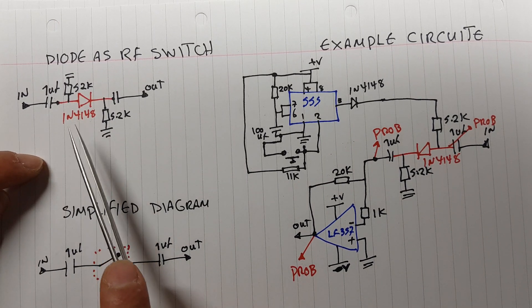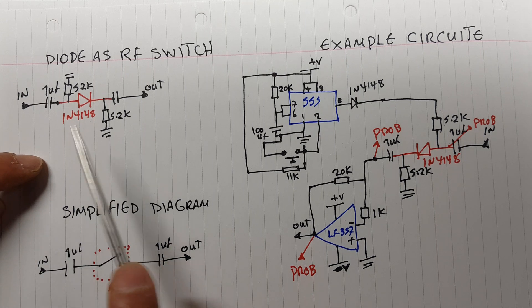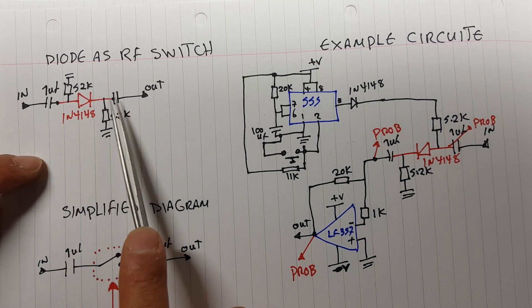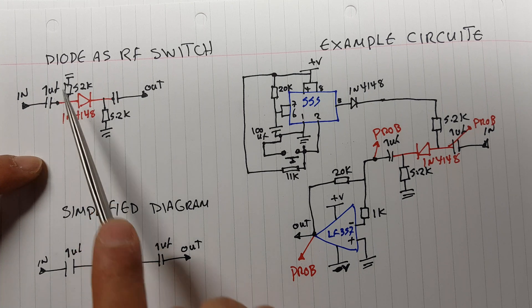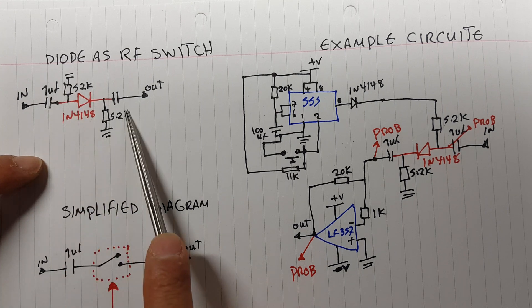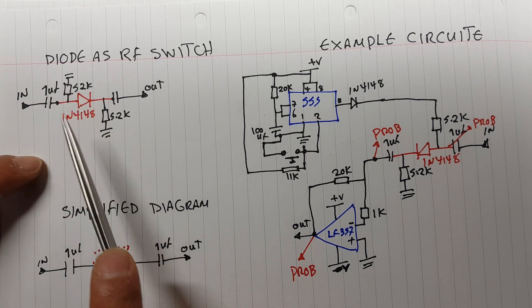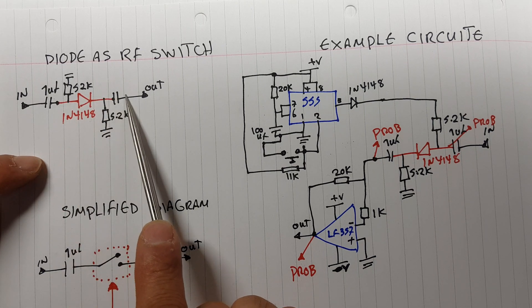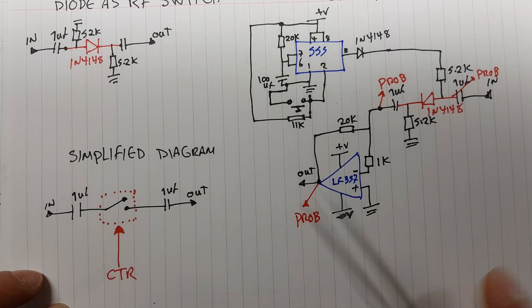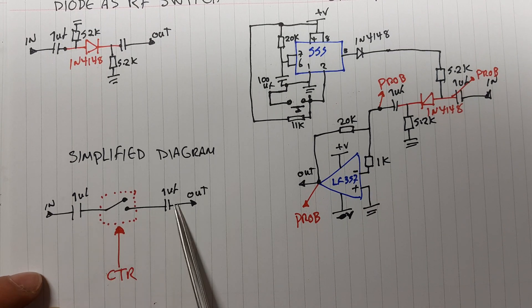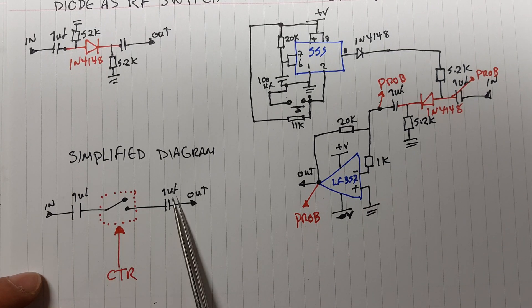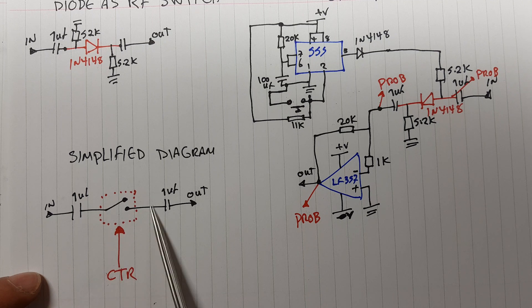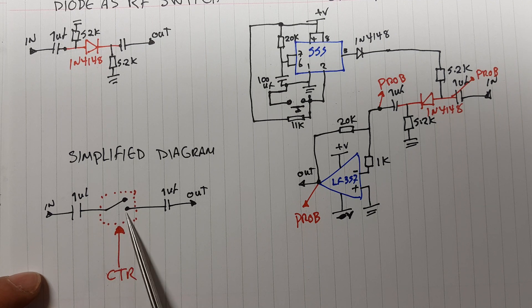We're going to use a 1N4148 and what we're going to do is AC couple the signal in and out so only AC passes through, and we're going to bias the diode in such a way that as soon as the diode turns on it's going to pass the AC signal through. The simplified circuit looks like this: our signal is AC coupled in and out and we're going to use a control voltage to turn this switch on and off.